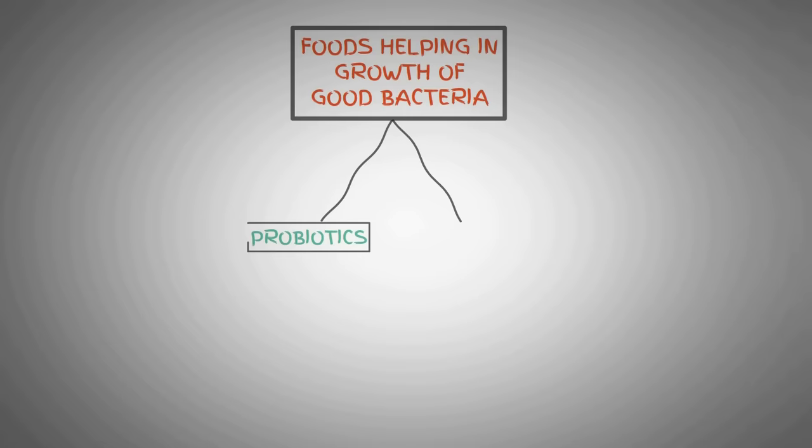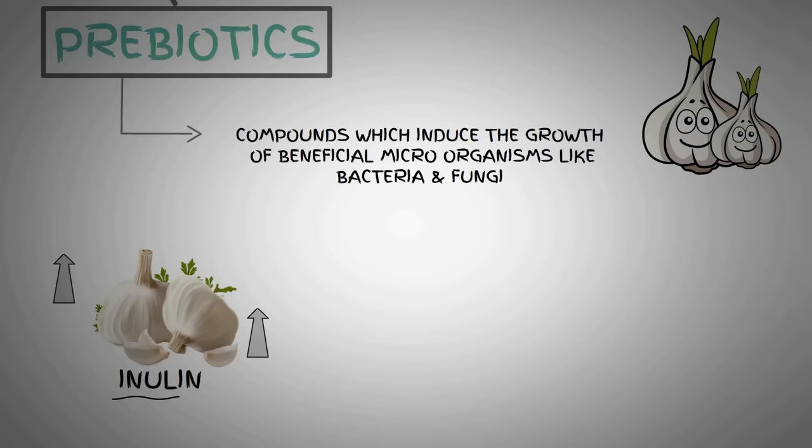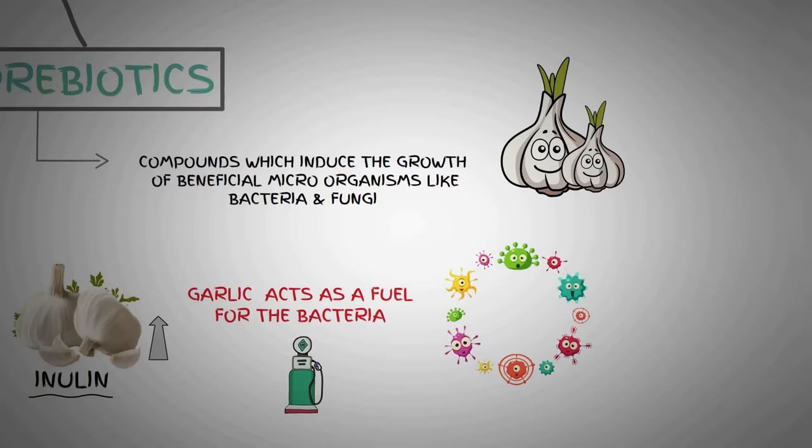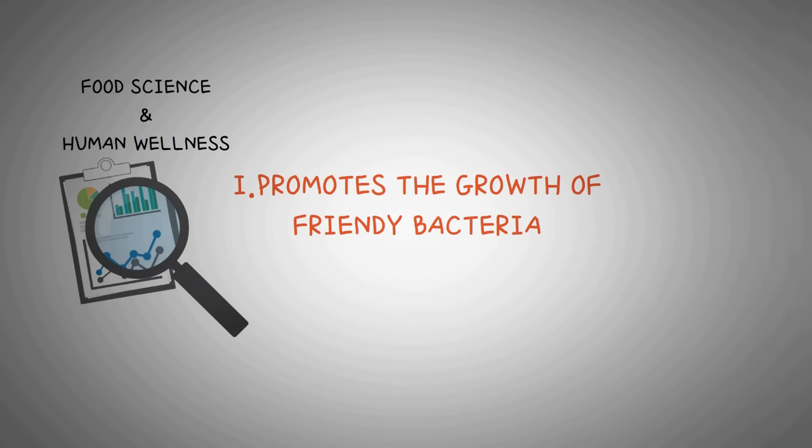Garlic is a very good example of a prebiotic. Prebiotics are compounds in food that induce or grow the activity of beneficial microorganisms such as bacteria and fungi in our gut. Garlic is naturally high in inulin, which is a type of non-digestible carbohydrate or functional fiber that feeds the good bacteria in your digestive system. It basically acts as a fuel for those bacteria to do their job better, which makes your gut function better overall. As per a study in Food Science and Human Wellness, garlic actually promotes the growth of friendly bacteria like bifidobacterium in the gut and prevents disease-promoting bacteria from growing at the same time.